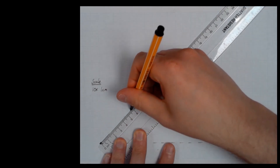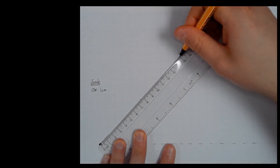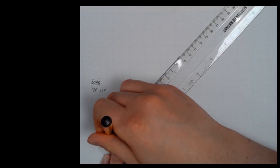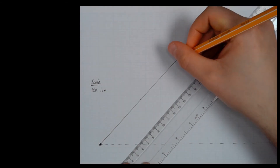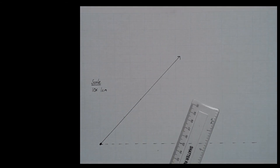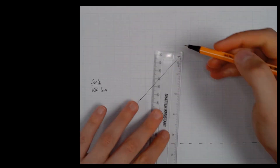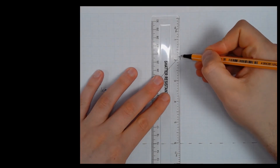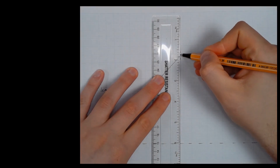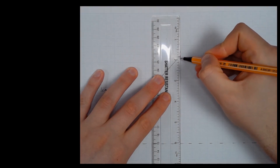I draw a little dot there so I know where my angle is going to go. Then using my ruler and my scale, I can draw in my 150 newton line, which I know is going to be 15 centimetres.